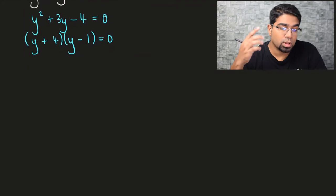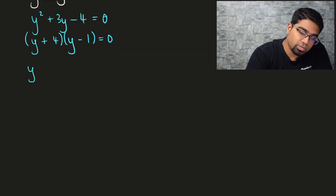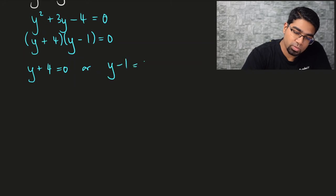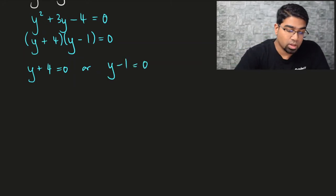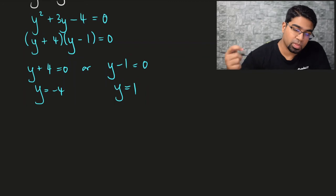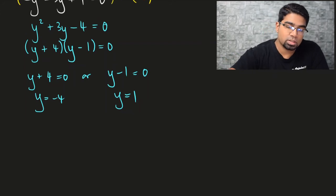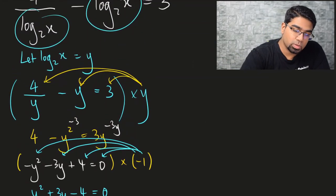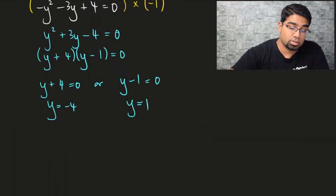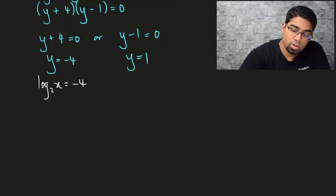If the product of two brackets is zero, then either y + 4 = 0 or y − 1 = 0. So y = −4 or y = 1.